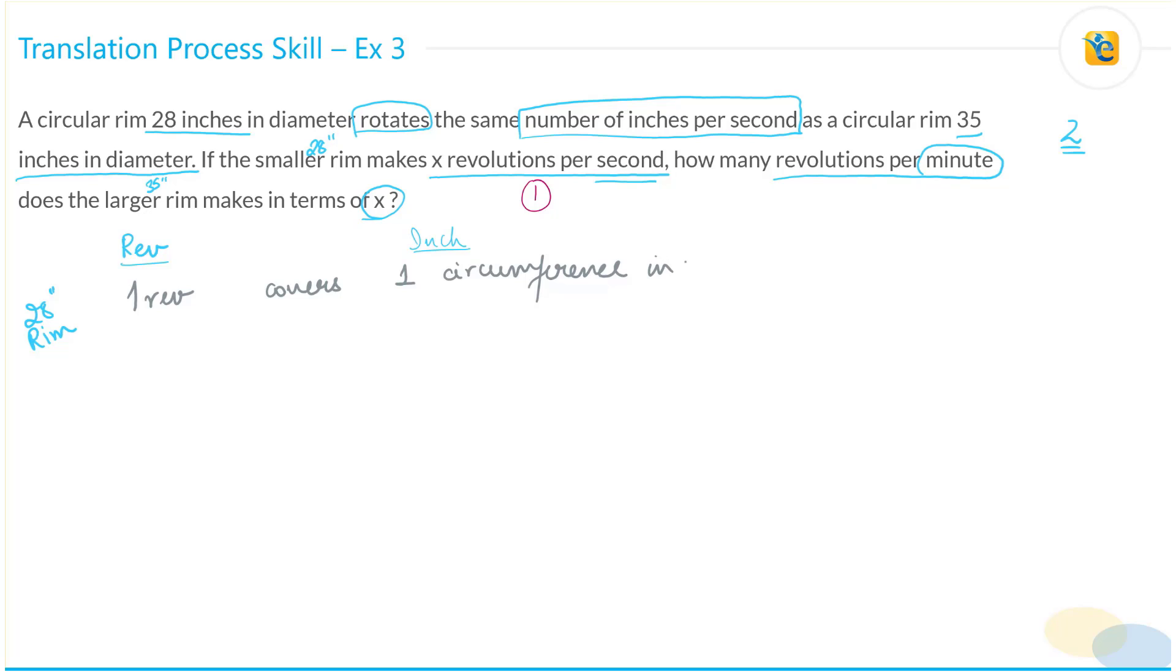Which means that X revolutions will cover X times the circumference in inches. We've been given X revolutions per second, which means X into 28 pi inches per second. This is the value for your 28 inch rim. All I've done is translated circumference into its actual terms 28 pi. Pi D is the circumference.